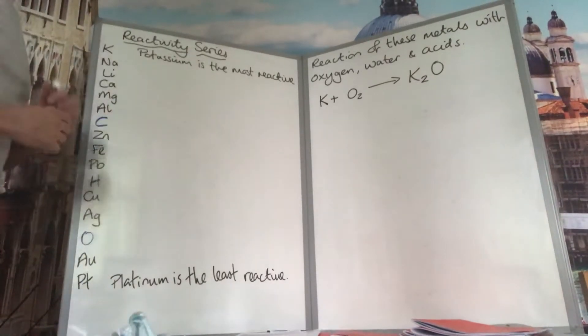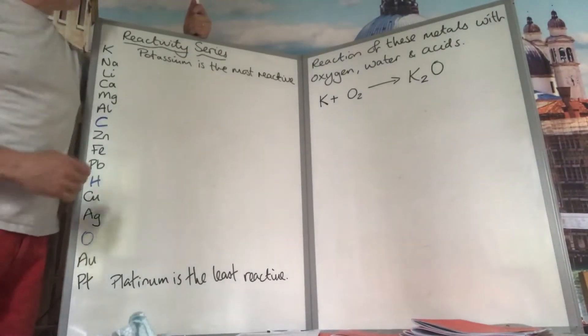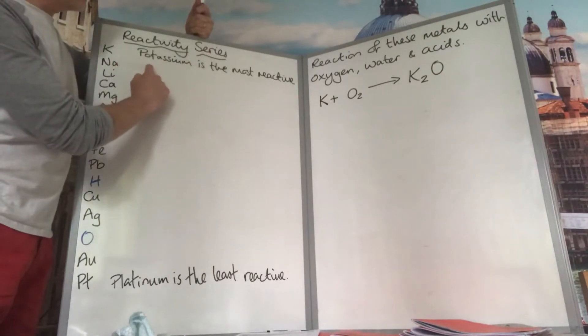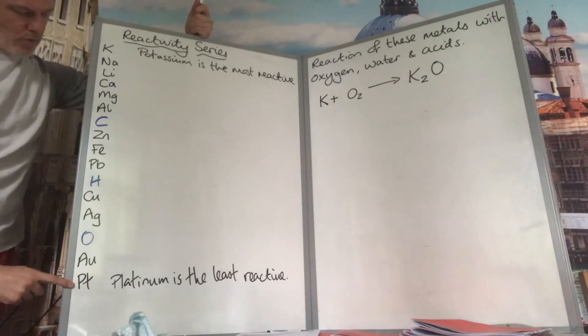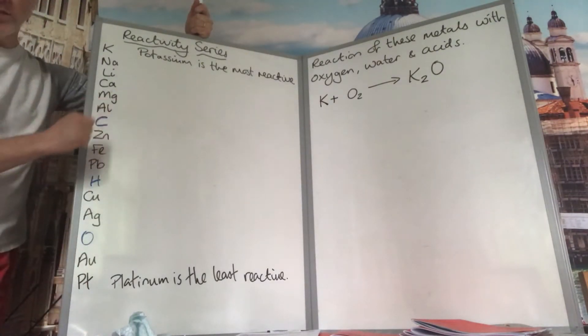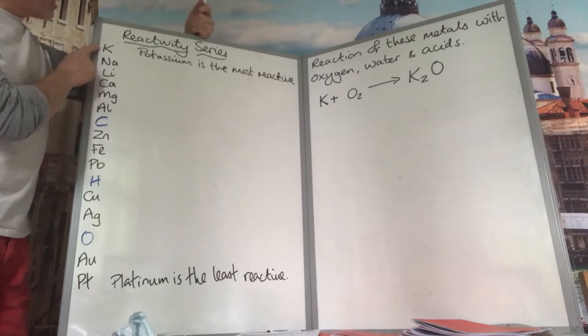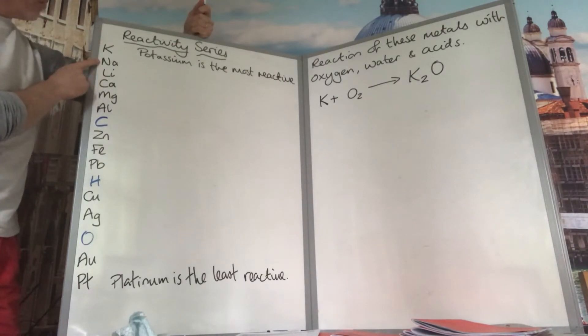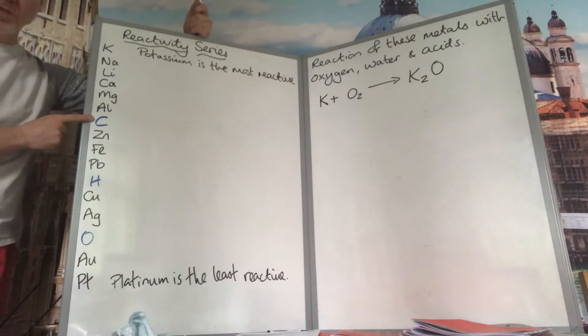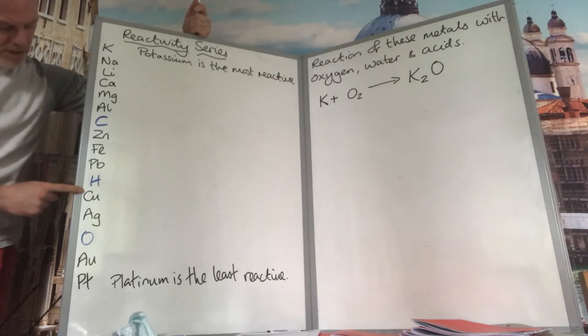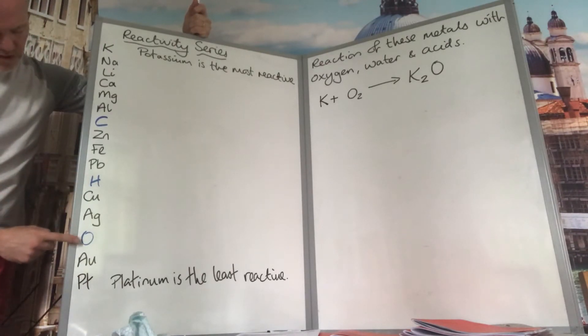Hi folks, C 5.1 reactivity series. We want to look at all of these elements here, their order of reactivity in relation to each other and their reactions. Potassium is the most reactive, followed by sodium, lithium, calcium, magnesium, aluminum, carbon being the first non-metal, then zinc, iron, lead, followed by hydrogen, copper, silver, oxygen, gold, platinum, platinum being the least reactive.